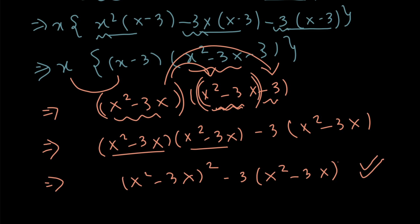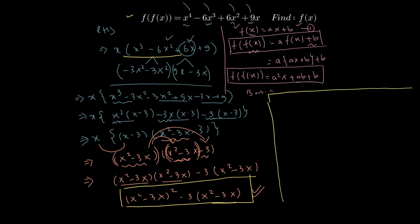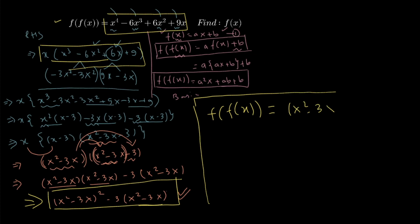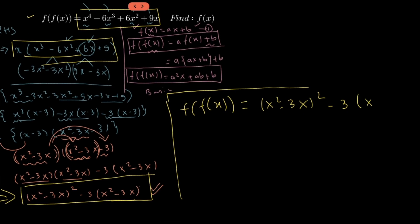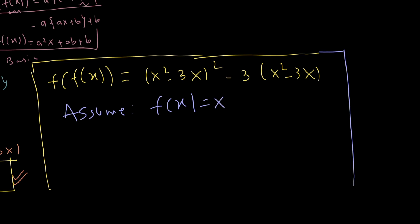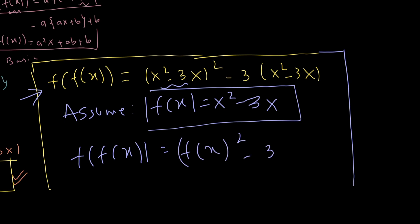We will stop at this step and do no more simplification. So far we have modified the right-hand side of the equation and obtained (x² - 3x)² - 3(x² - 3x). Writing the original equation: f of f of x equals this new value, which is (x² - 3x)² - 3(x² - 3x). To simplify this further, I will assume that f of x equals x² - 3x. Under this assumption, this expression becomes f of x squared minus 3 times f of x, which is exactly f of f of x.